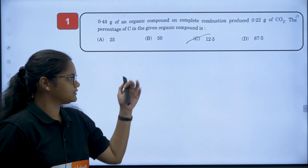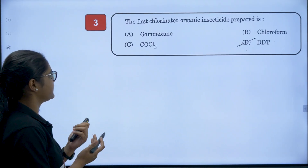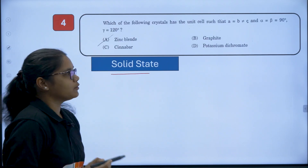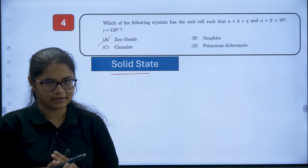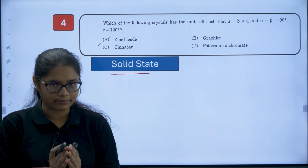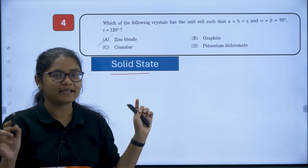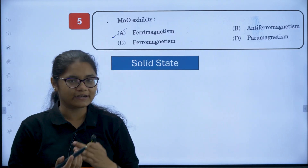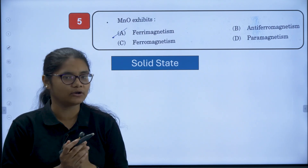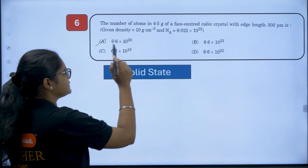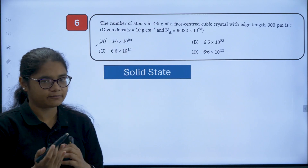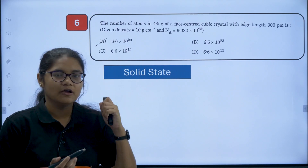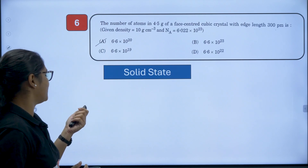Now let's look at the deleted questions. There is no problem with the first and second questions. Coming to question number 4, which is from the Solid State chapter — this question is deleted and will not be evaluated. Question number 5 also belongs to Solid State, so it will also not be evaluated. Question number 6 is from Solid State as well, based on the density formula, which is also from the deleted portion. So questions 4, 5, and 6 from Set B4 will not be evaluated.